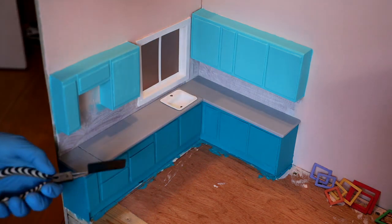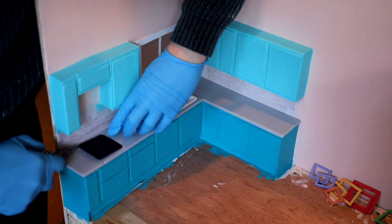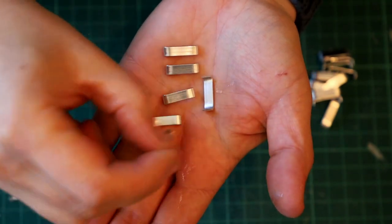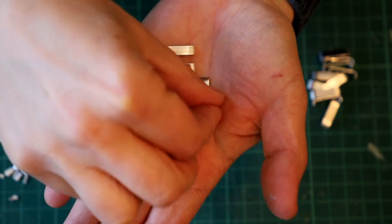I've added a piece of black Worbla to create a hob. For the handles I've used some flat wire that I shaped with a little plier.